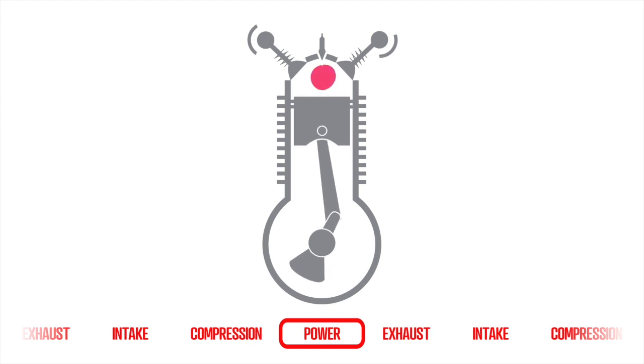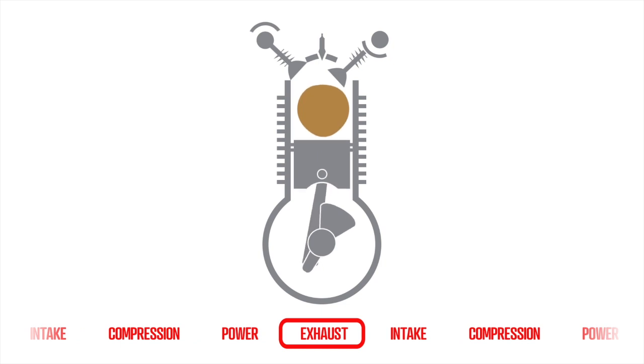The power cycle pushes the piston down through the rapidly increasing pressure of the burning fuel air mixture. In the exhaust cycle the burnt gases are forced out of the cylinder through the open exhaust valve.